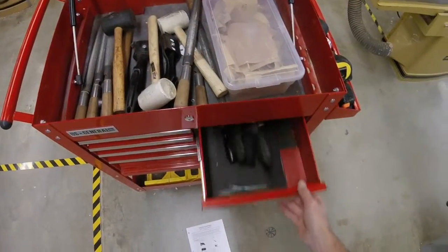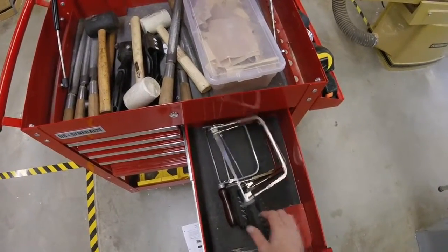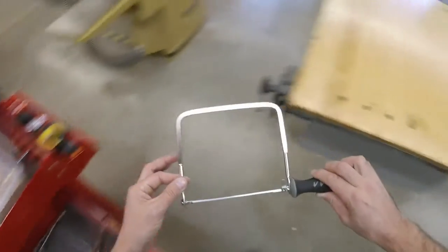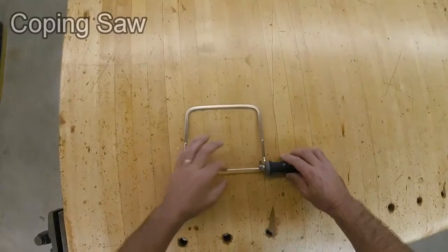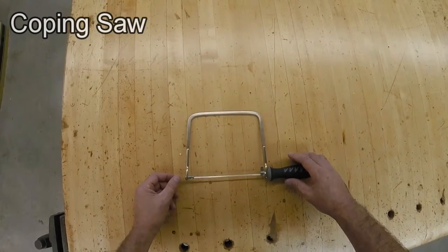The next item is a coping saw. The coping saw has a very thin blade so that you can make curved cuts with it.